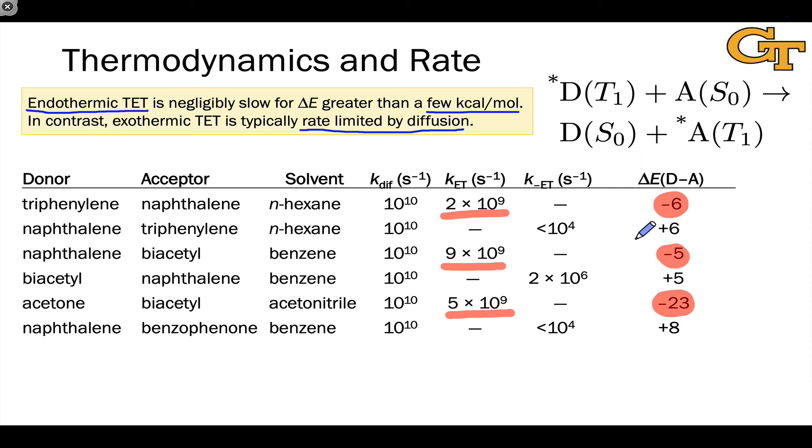On the flip side, when we talk about endothermic triplet energy transfer, for example, here plus 6, plus 5 in this case, and plus 8 in this case, first of all, the rates of energy transfer in the forward direction are not even listed because they are undetectably slow.